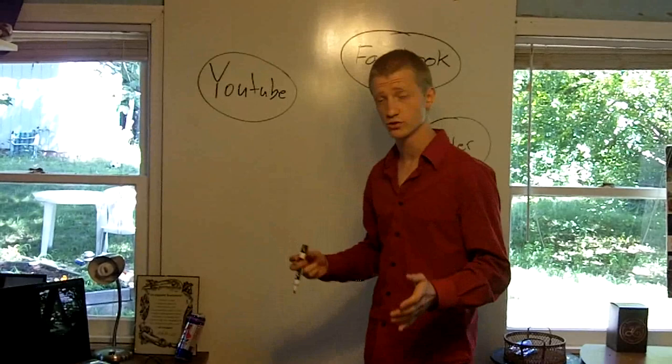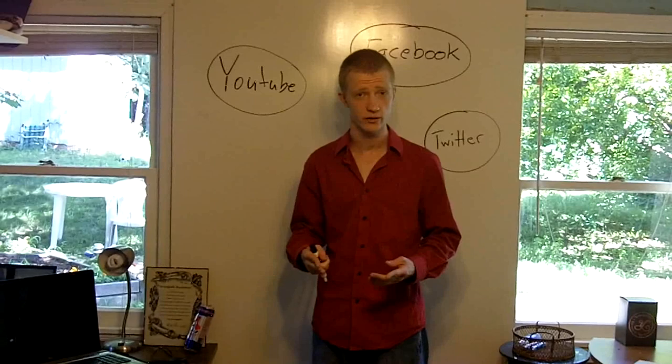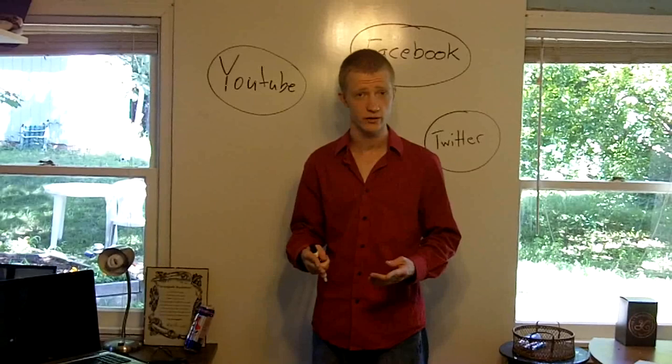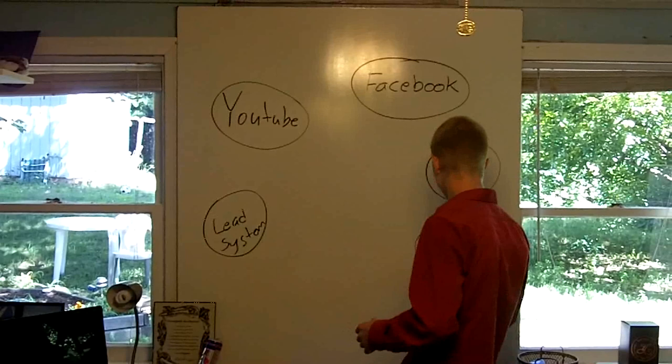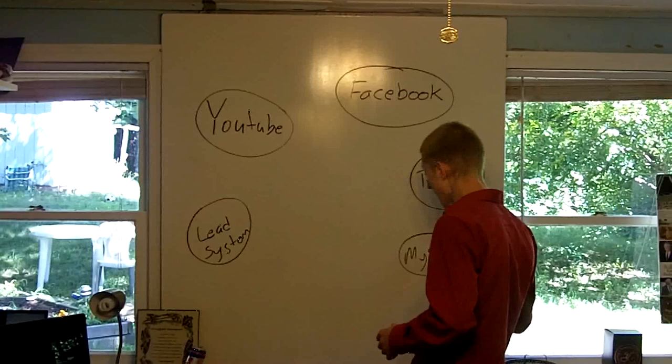And then there are tons of different lead generation systems that you could use online. One of them is called My Lead System Pro. Jonathan Budd has one that's called the Seven Figure Networker System. You might be familiar with Mike Dillard's Magnetic Sponsoring System. So let's just say lead systems. And then there's MySpace, which is kind of an old one.